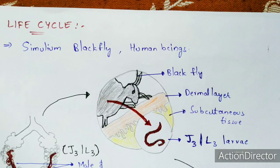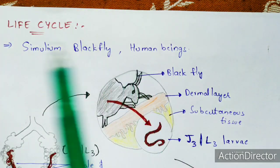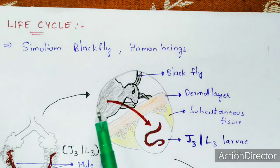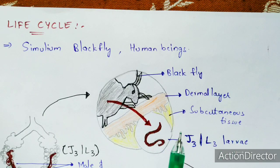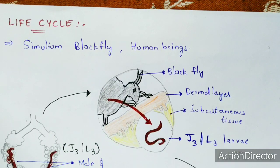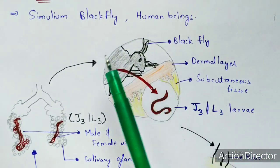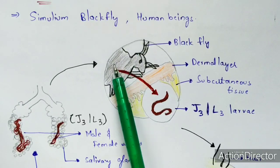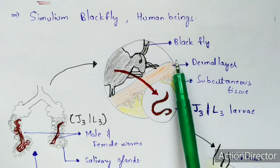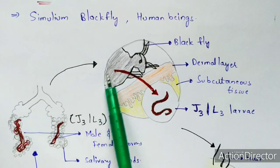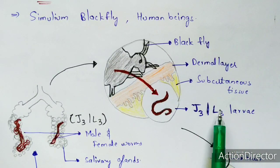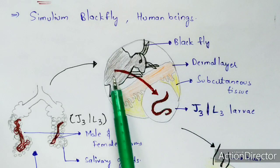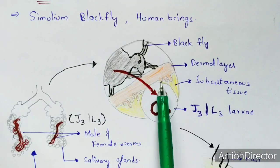The life cycle of Onchocerca volvulus occurs in two hosts: the black fly and human beings. Starting from the human host — an infected black fly, whose gut contains J3 or L3 larvae (third stage larvae), bites the dermal layer of a human being.